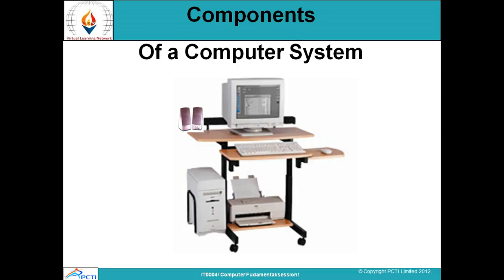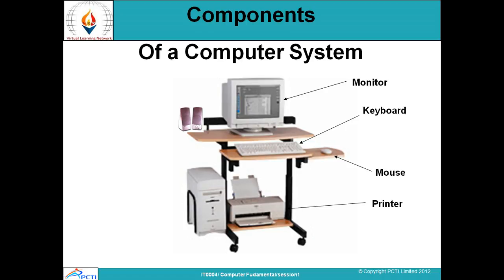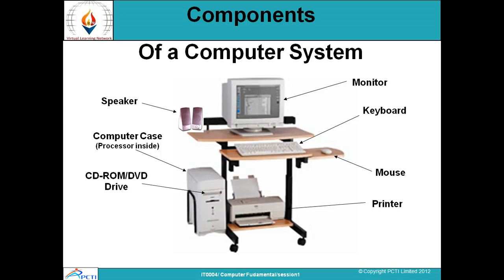Now we will discuss the various components of a computer system. The monitor or screen is the display device. The keyboard is used for input, and there are also wireless keyboards available. We have the mouse, and a printer for printing documents. Audio output comes through speakers. The main processing is done in the CPU — the computer case, also called a CPU — which has a processor inside. Computers also have CD drives and DVD drives.